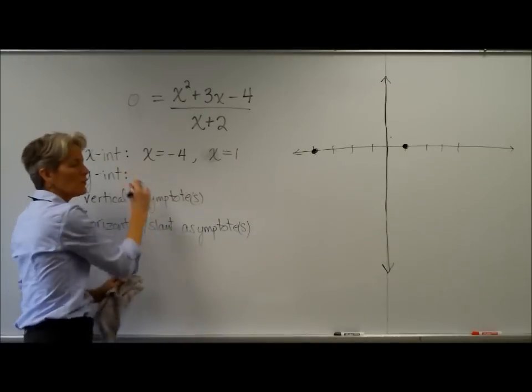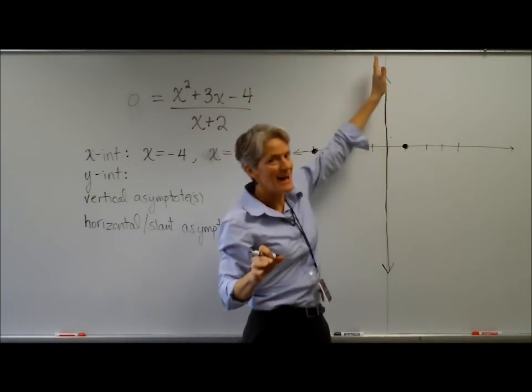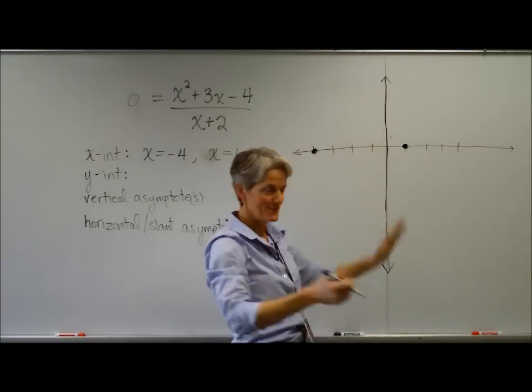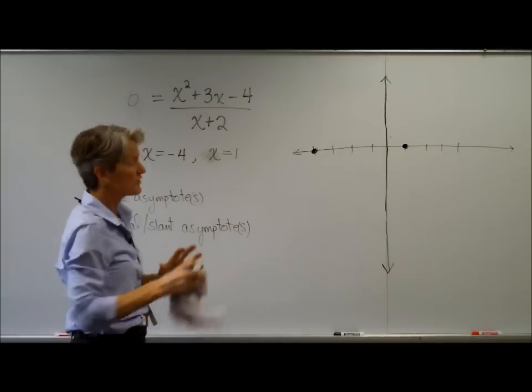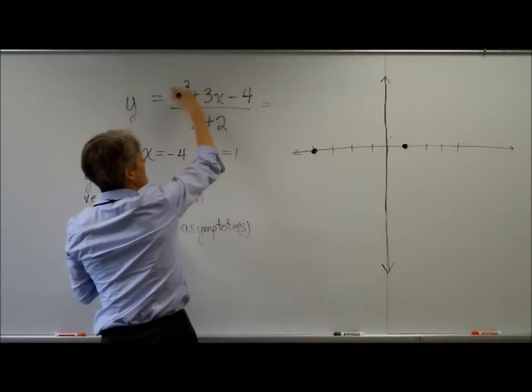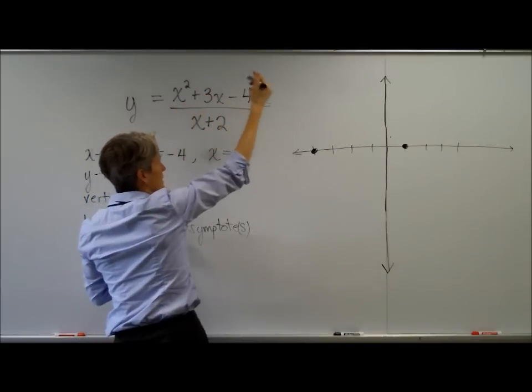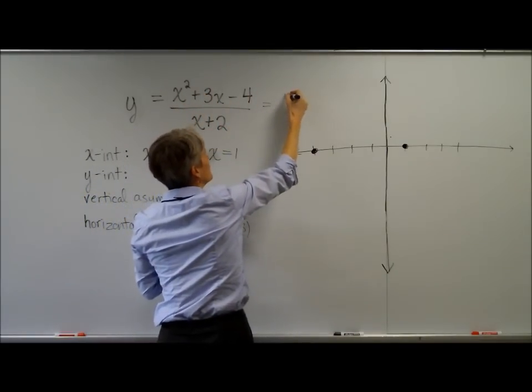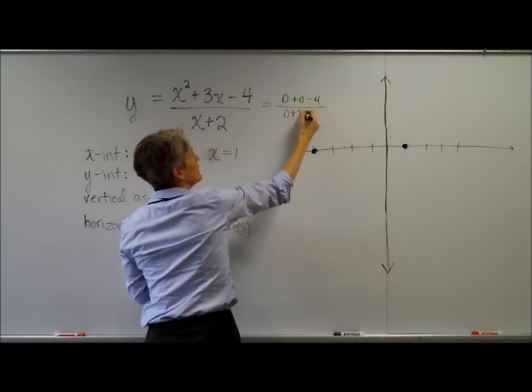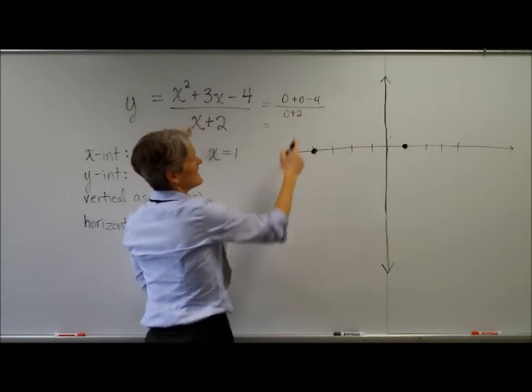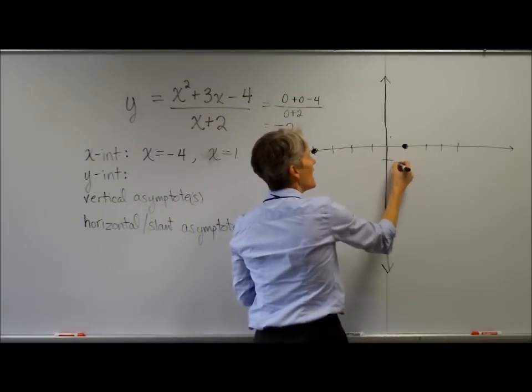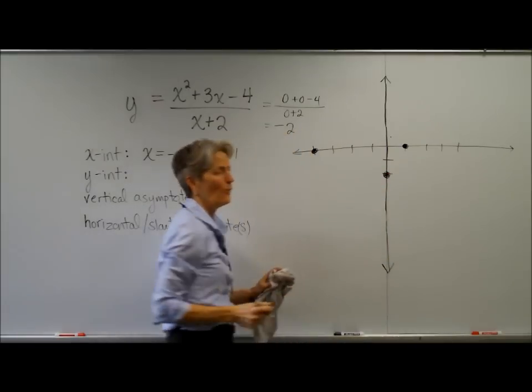Okay. Y-intercept, of course, is where it crosses the y-axis. Any point on here, we'll have an x-value of? Zero. Zero. So let's just go ahead, go back to my function, and imagine zeros in for all these x's. Zero squared, plus three times zero, minus four, zero, plus two. That's looking like a negative four divided by two, or a negative two. Negative two.